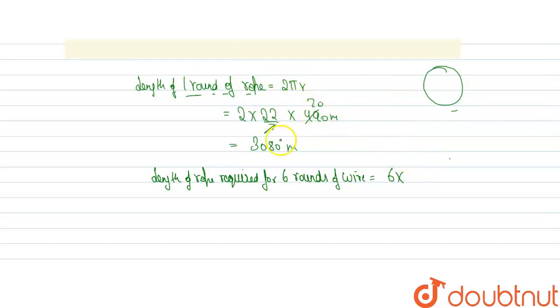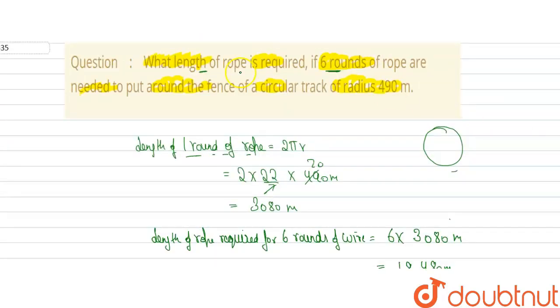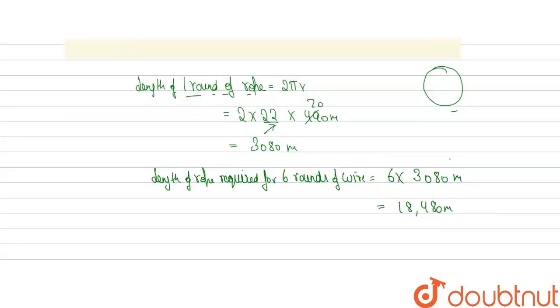Which is equal to length of 1 round of rope, which is equal to 3080 meters. So answer will come out to be 18,480 meters. Therefore, total length of rope required will be 18,480 meters, which is our answer.